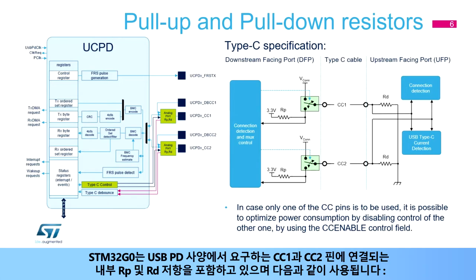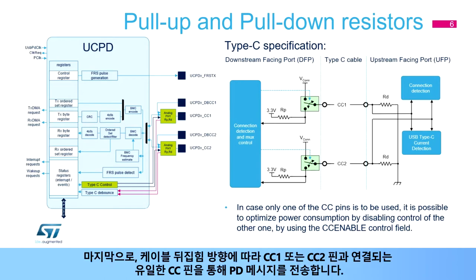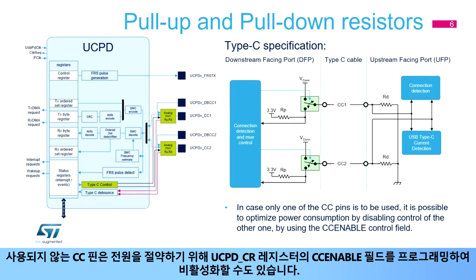The STM32G0 implements internal RP and RD resistors connected to CC1 and CC2 pins, required by the USB PD specification to detect a connection, determine whether the cable is flipped, and determine the default available power, as the current carrying capability depends on the values of RP. A unique CC pin — CC1 or CC2, according to cable flip — is used to transport PD messages. The unused CC pin may become the V-CON pin, which supplies power to integrated circuits in active cables. In order to conserve power, the unused CC pin can also be disabled by programming the CC enable field in the UCPD-CR register.